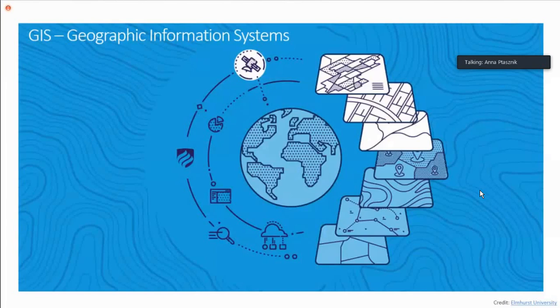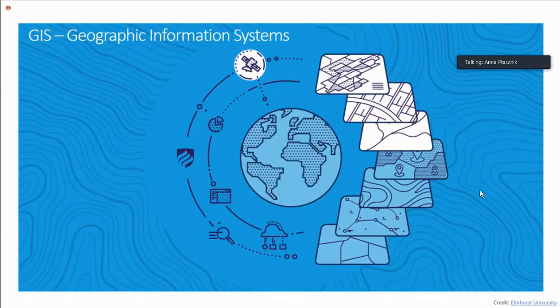If you don't know what GIS is, that's okay. We're going to start from the beginning. Geographic Information Systems is what that stands for. Some people also use the same acronym for Geographic Information Science. Basically, this is the system and science around capturing geographic information, storing it, displaying it, and analyzing it.